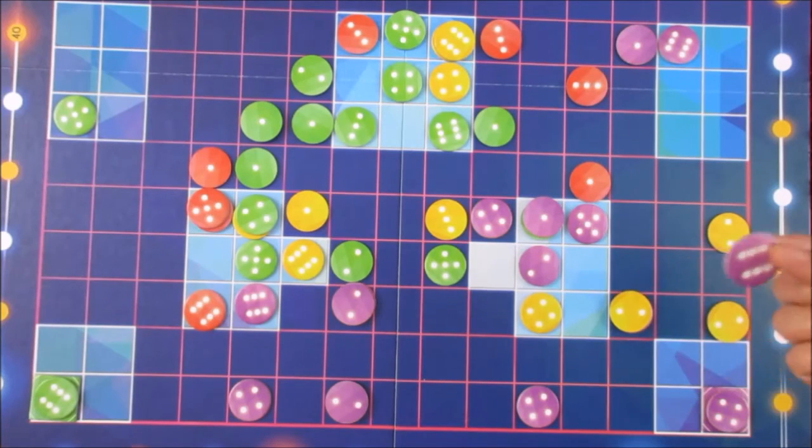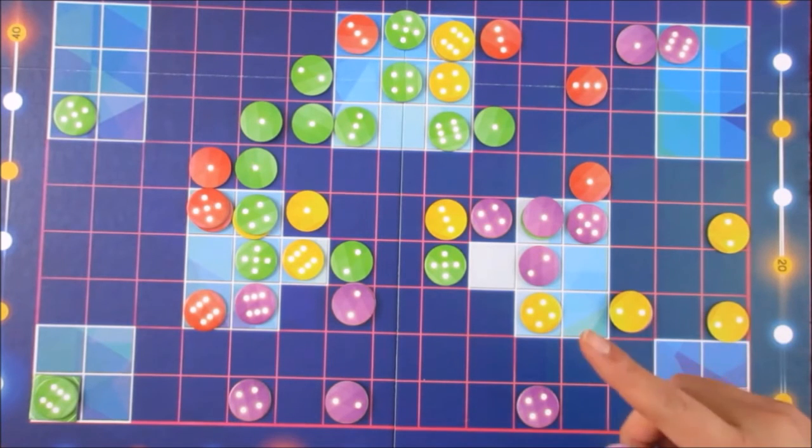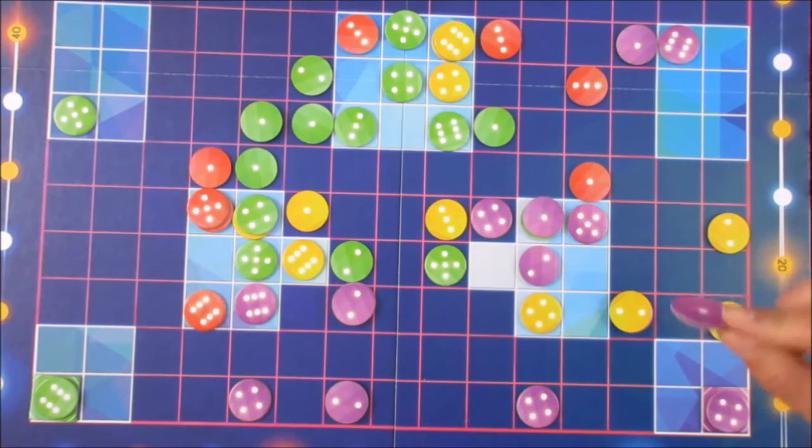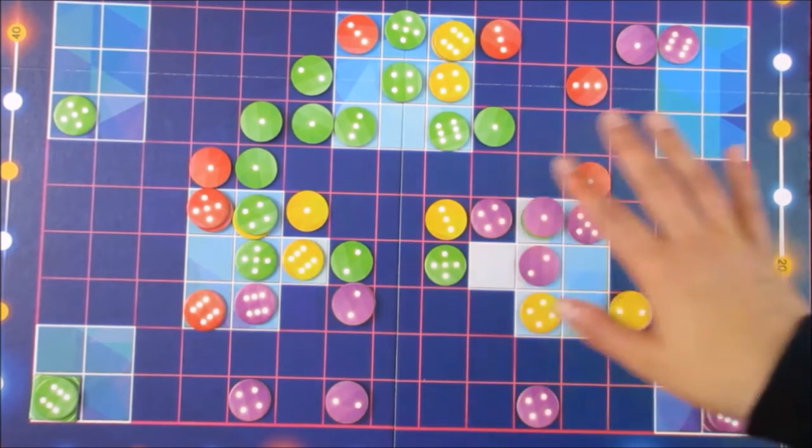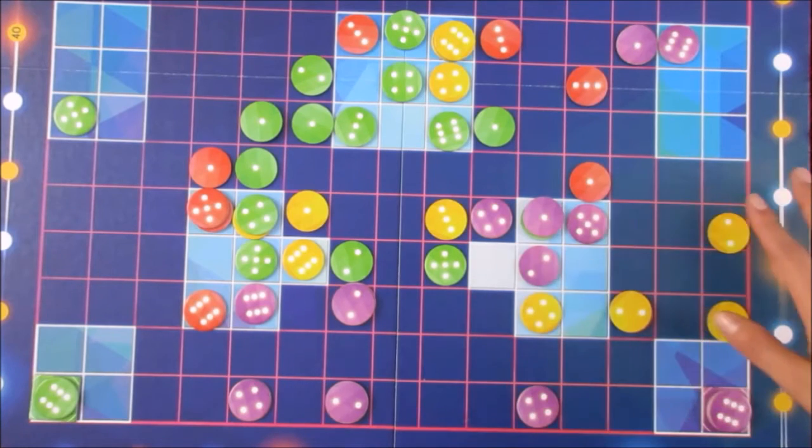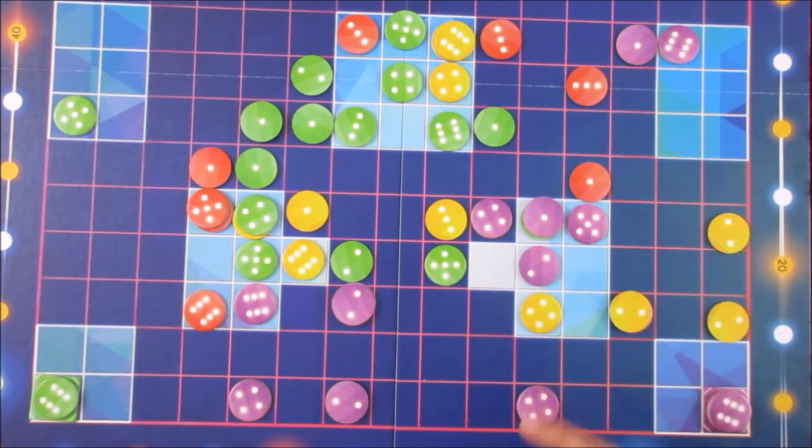Eventually there might be a time where you can't place or you don't want to place one of your tokens in a certain spot. You're always allowed, one time only, to place one of your tokens drawn onto the corner of where you've initially started. So the game ends eventually when all the tokens are used up or when one player cannot place any more tokens on the board.